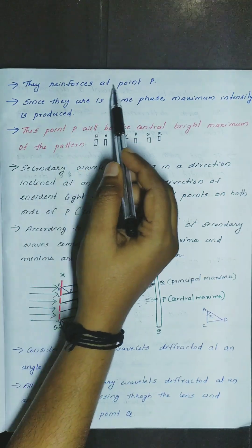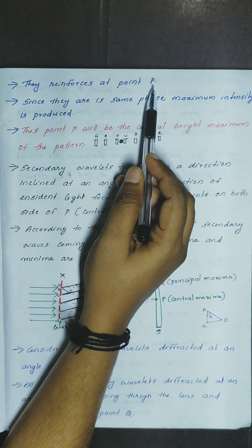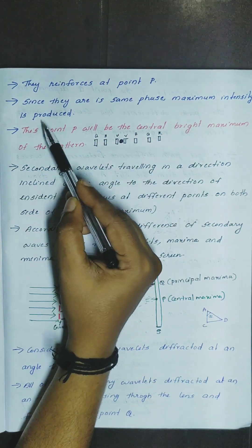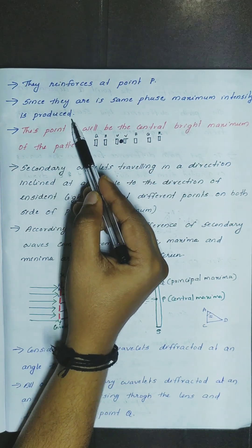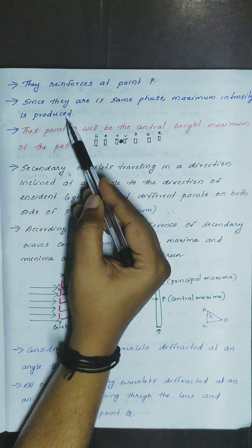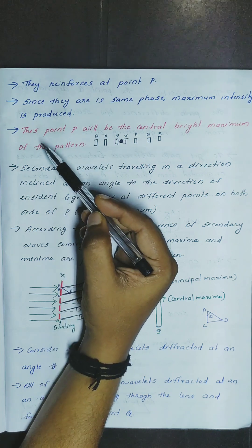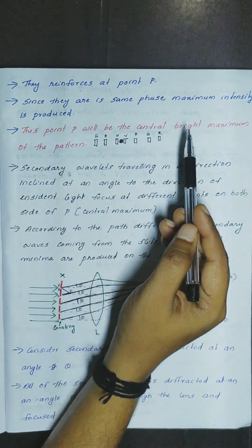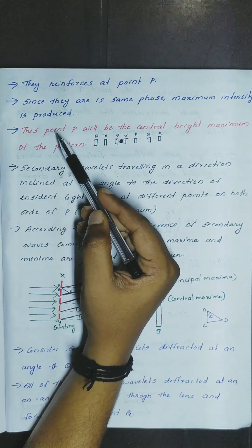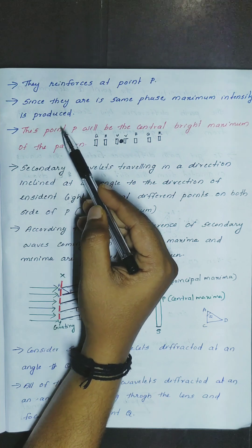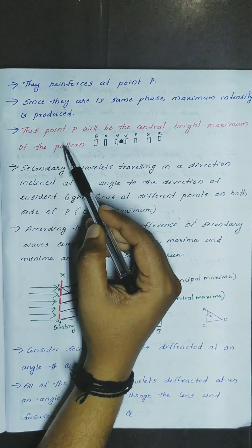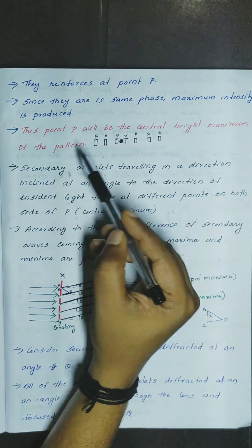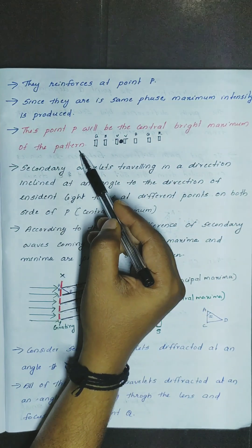They reinforce at point P. Since they are in the same phase, maximum intensity is produced. This point P will be the central bright maximum of the pattern.